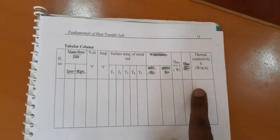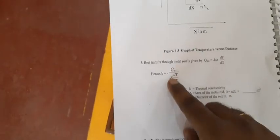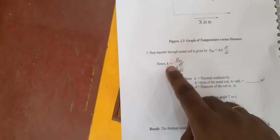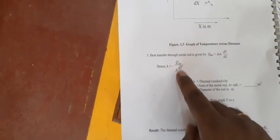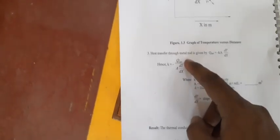How to find thermal conductivity? It is very simple. We know the Fourier law of conduction. What is the Fourier law of conduction? Q equals minus K times A times dT by dx. From Fourier's law, K equals minus Q divided by area times dT by dx. Q is voltage into current.